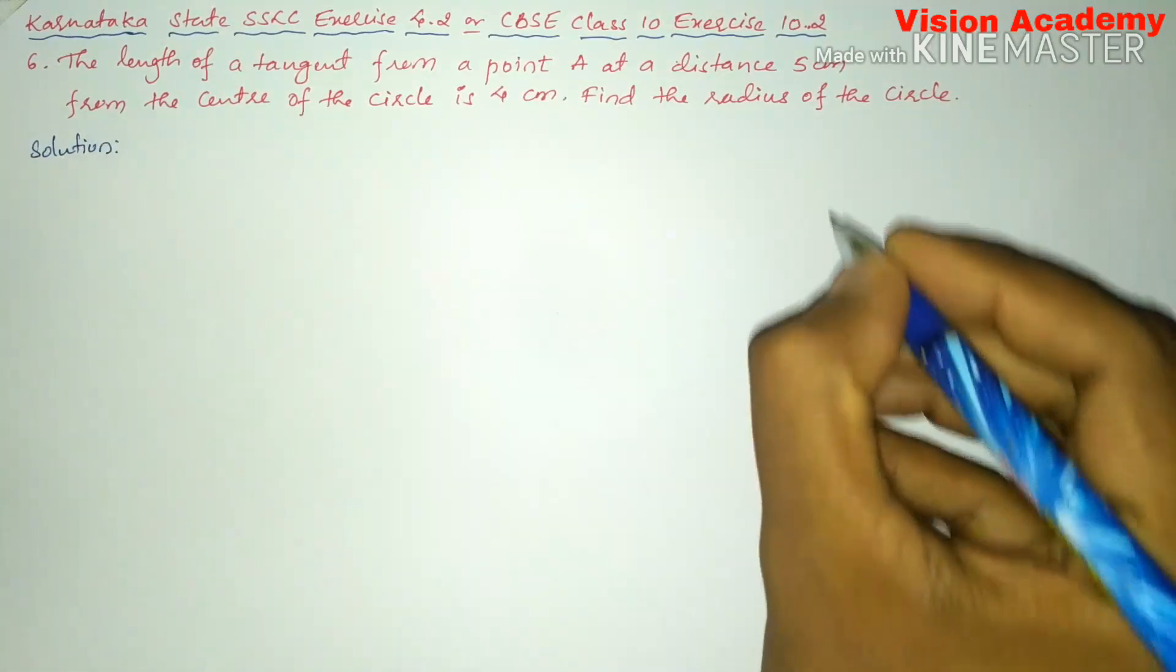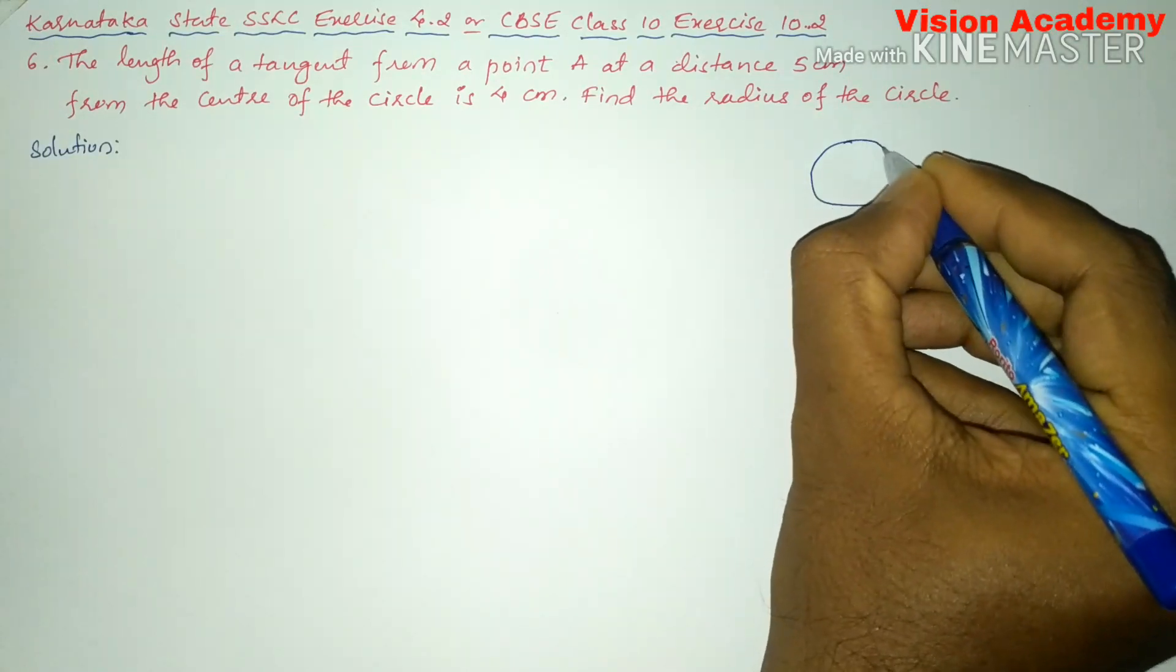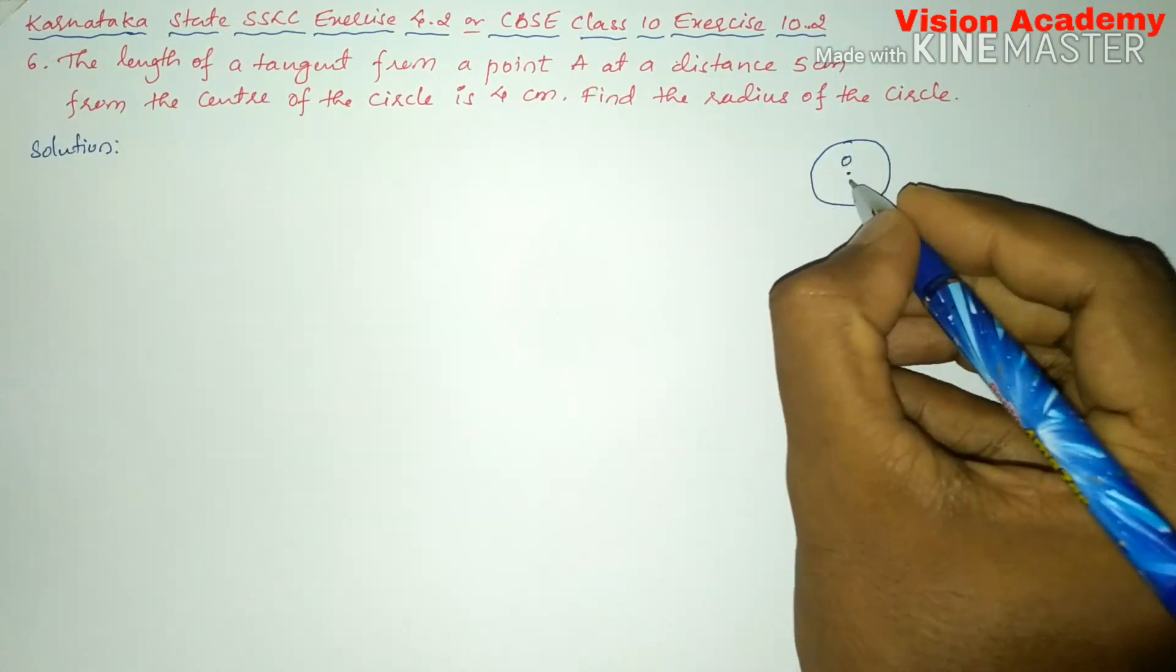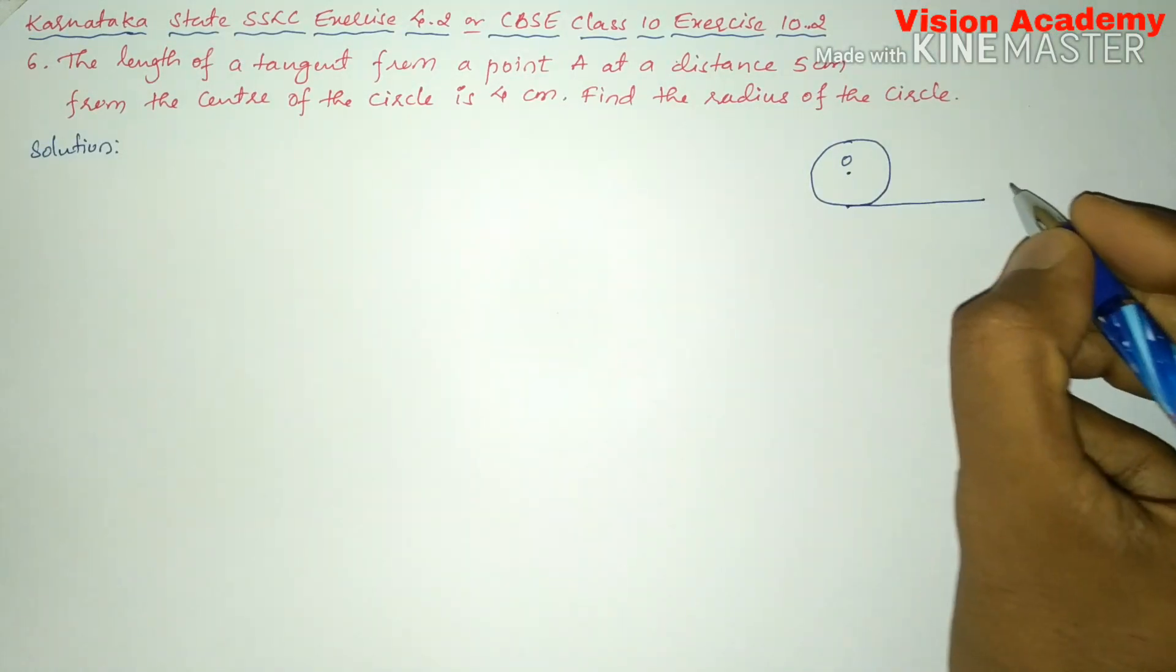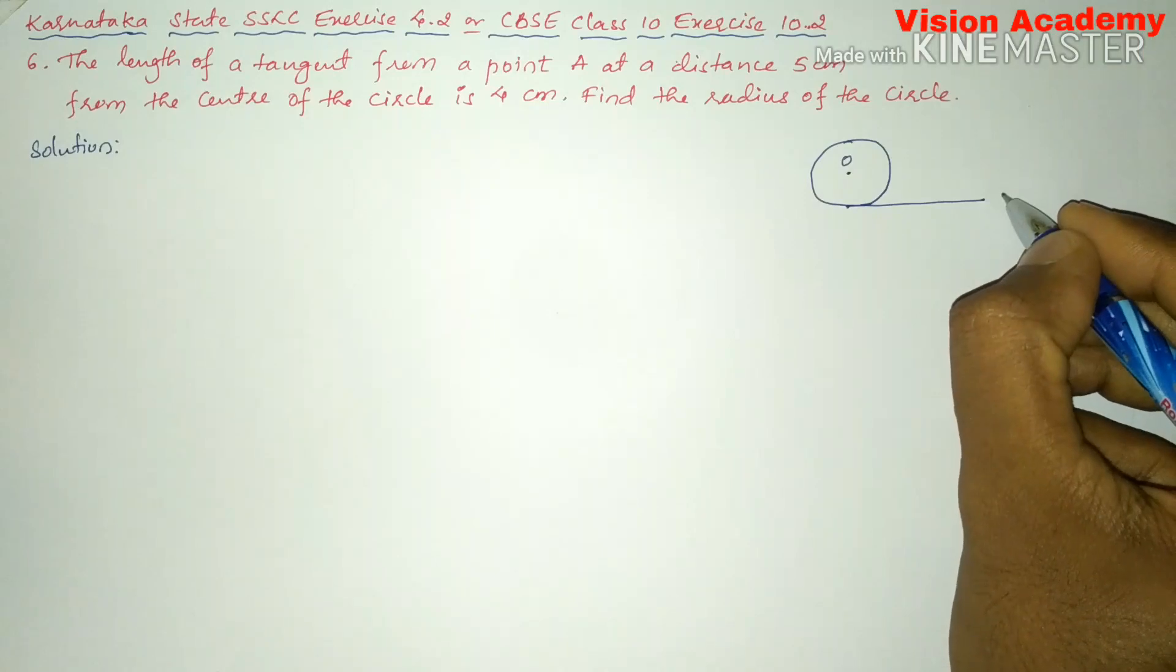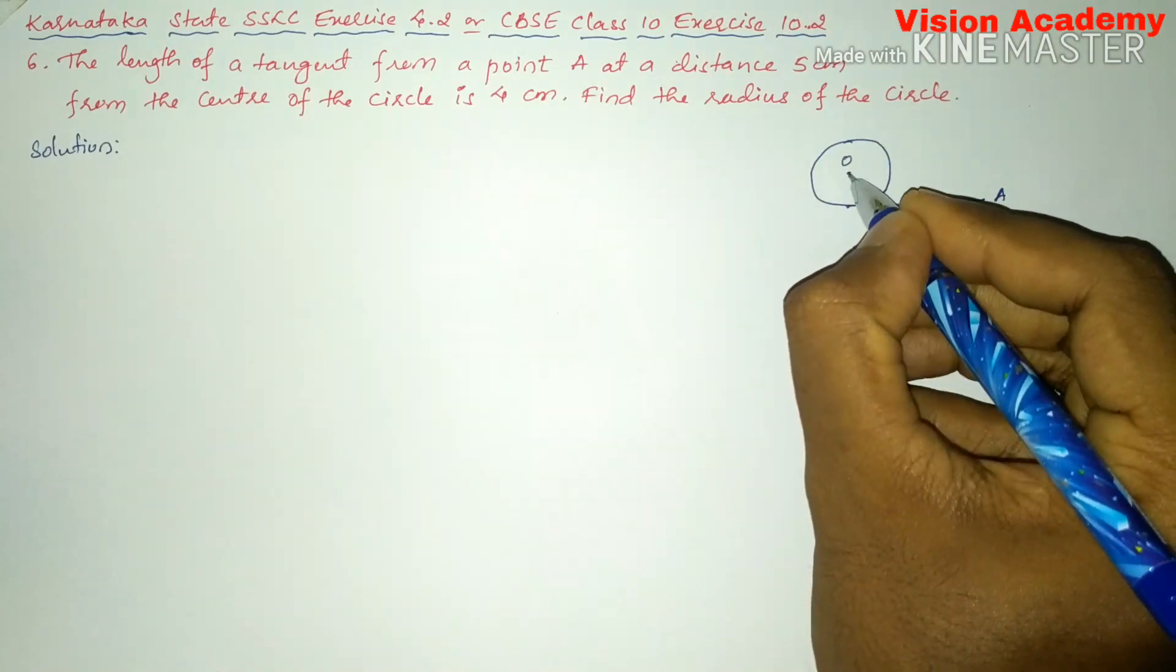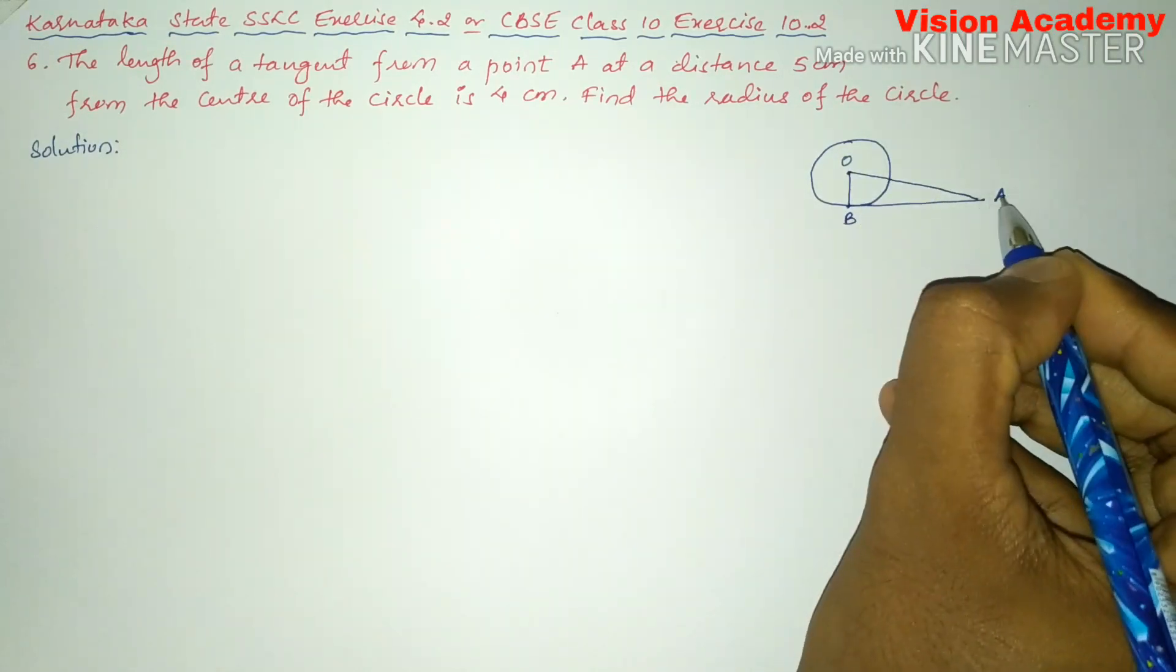Here, let us draw a circle with center O and let us draw a tangent from the point, let us say A, and join AB and OA.